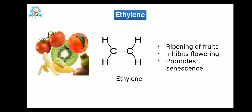Ethylene is a gas produced by plant leaves or fruits. This gas is able to ripen fruits, and its main function is the ripening of fruits. It also inhibits flowering, and promotes senescence, meaning the detachment of leaf or fruit from the plant branches.